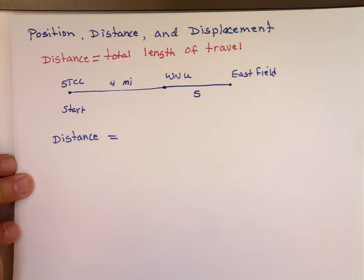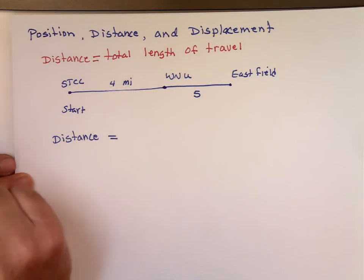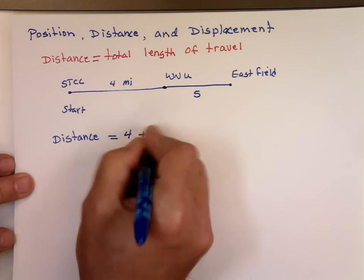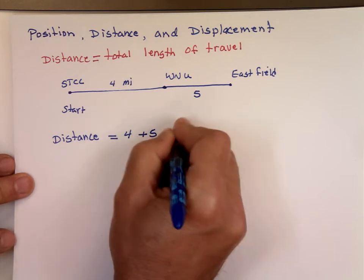What is the total distance traveled? This is the total length of travel. You traveled the four miles plus the five miles, which is nine miles.